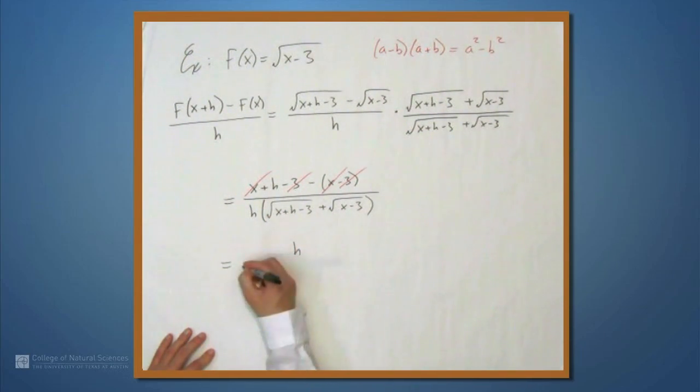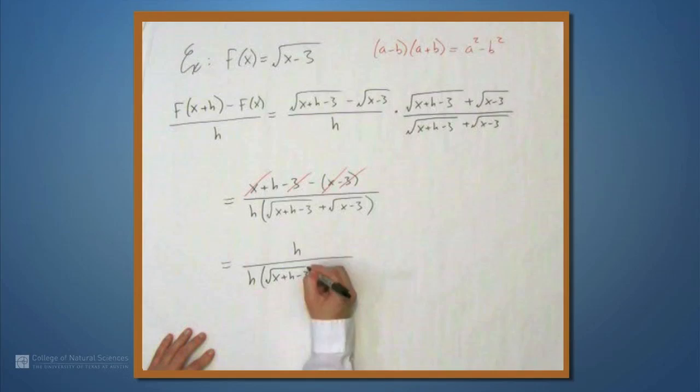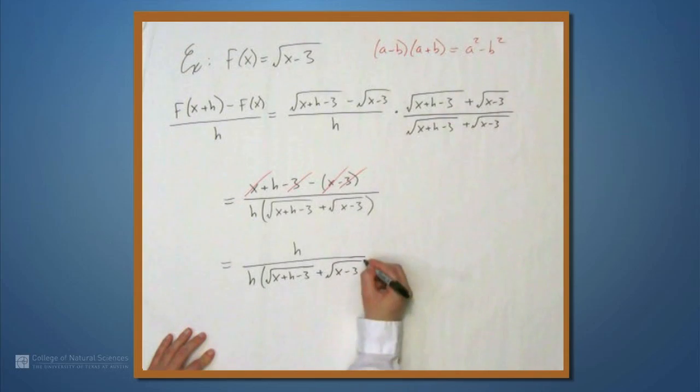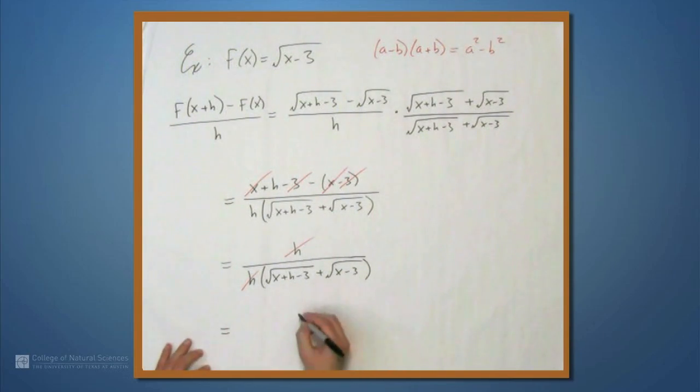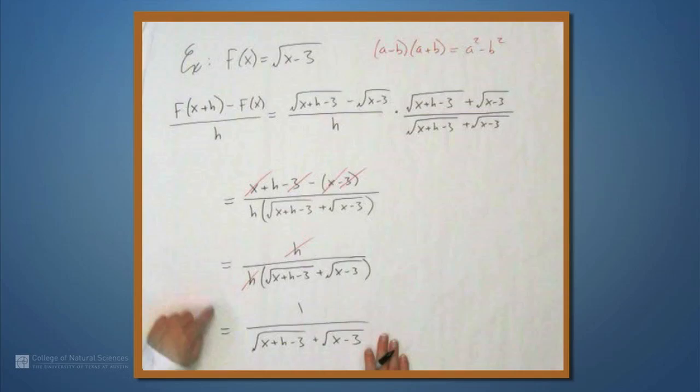This is h over h times the quantity square root of x plus h minus 3 plus the square root of x minus 3. Now, we've gotten all the algebra done, so we can go back to the definition of a limit and evaluate this limit as h approaches 0.